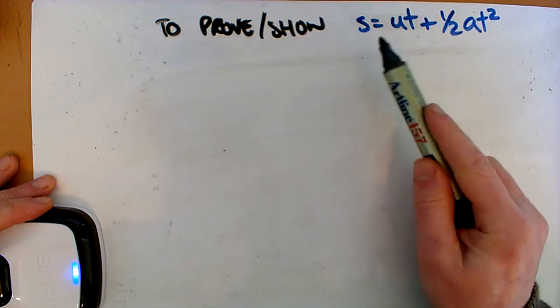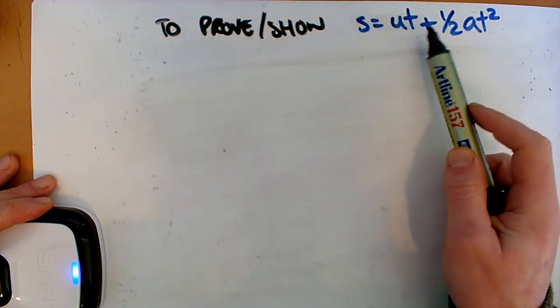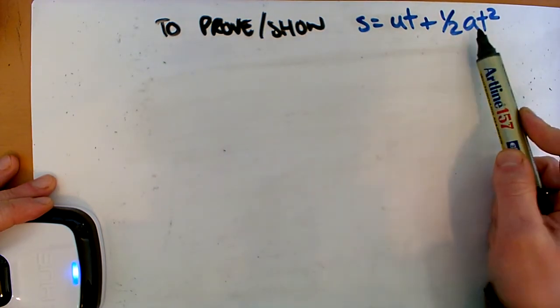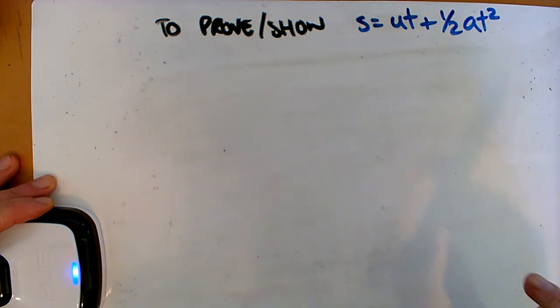And you should all remember what this is. So S is displacement, U is the initial velocity multiplied by the time, plus half the acceleration multiplied by the time squared.